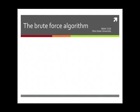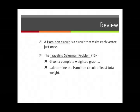We are thinking about Hamilton circuits. A Hamilton circuit in a graph is a circuit that visits each vertex just once. We're looking at something called the traveling salesman problem, or TSP. That means: given a complete weighted graph, determine the Hamilton circuit of least total weight.